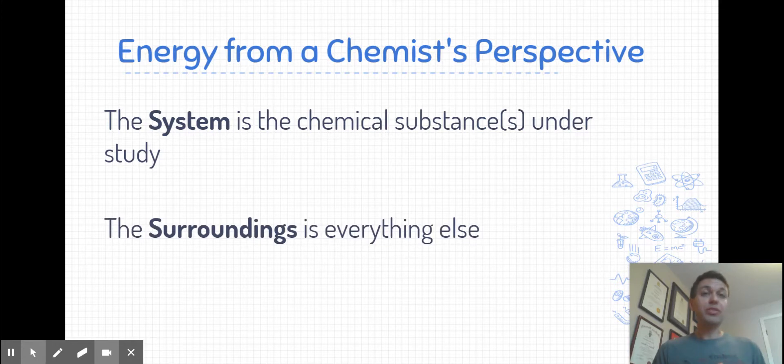When we use the word surroundings, that literally means everything else. And I don't mean everything else directly surrounding the chemicals, I mean everything else in the universe. We're going to be taking measurements in the surroundings right close to the system at that system-surroundings barrier. But when we talk about the surroundings in chemistry, that is everything in the universe that is not the chemical system.